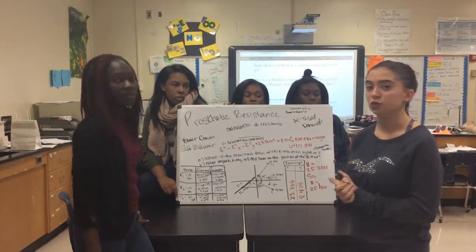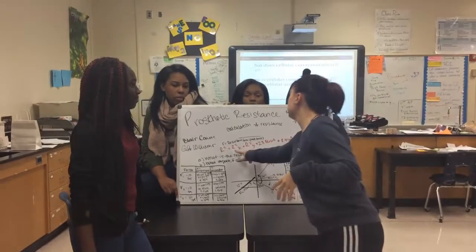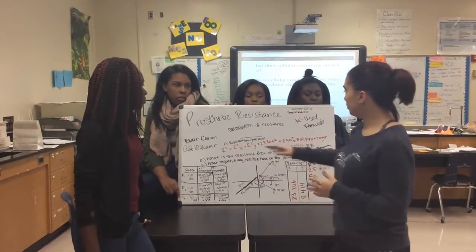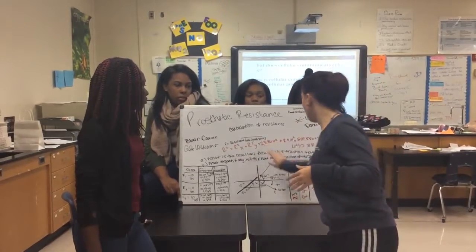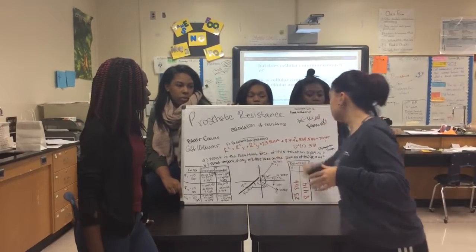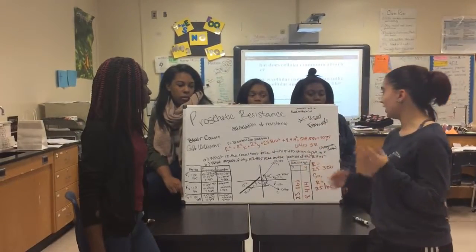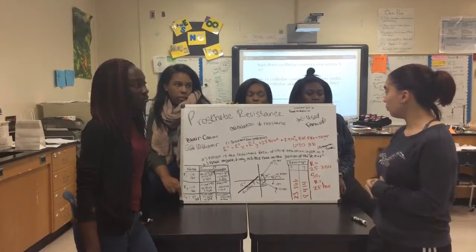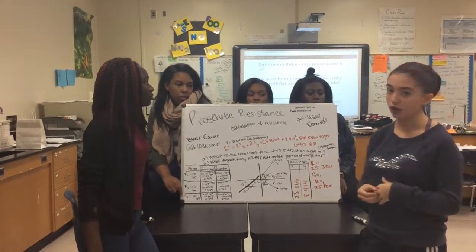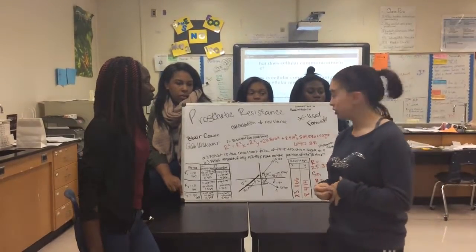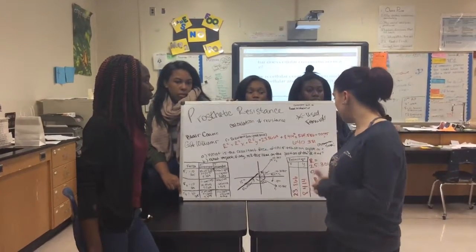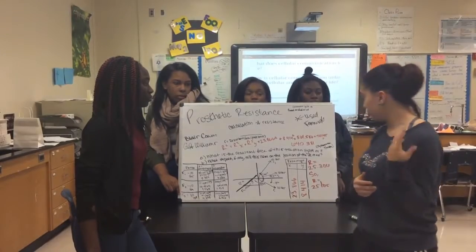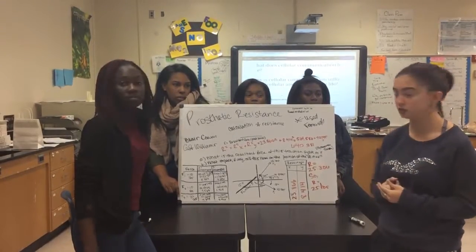So what we did was we plugged these into this equation right here, putting the result of X for X and the result of Y for Y, and then we applied the Pythagorean theorem. We ended up with 640.381, and if you take the square root of that you get 25.306, which rounds to 25 pounds.